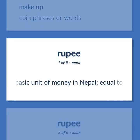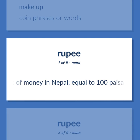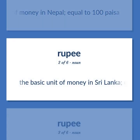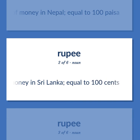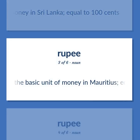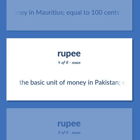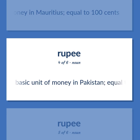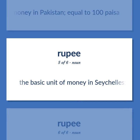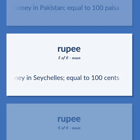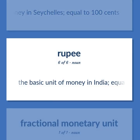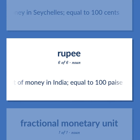The basic unit of money in Nepal, equal to one-hundred Pisa. The basic unit of money in Sri Lanka, equal to one-hundredth cents. The basic unit of money in Mauritius, equal to one-hundred cents. The basic unit of money in Pakistan, equal to one-hundred Pisa. The basic unit of money in Seychelles, equal to 100 cents. The basic unit of money in India, equal to 100 paisei.